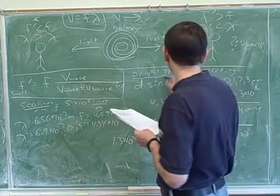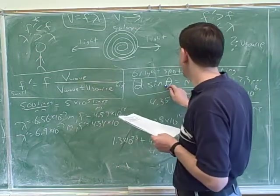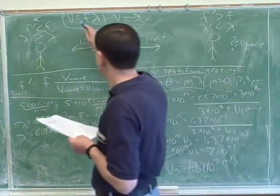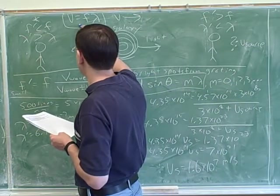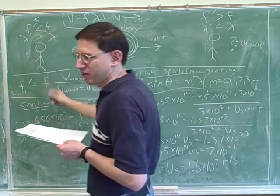So there were three big equations we used here. The diffraction grating equation gave us lambda. Then v = fλ gave us the frequencies. And then we have the Doppler effect equation.